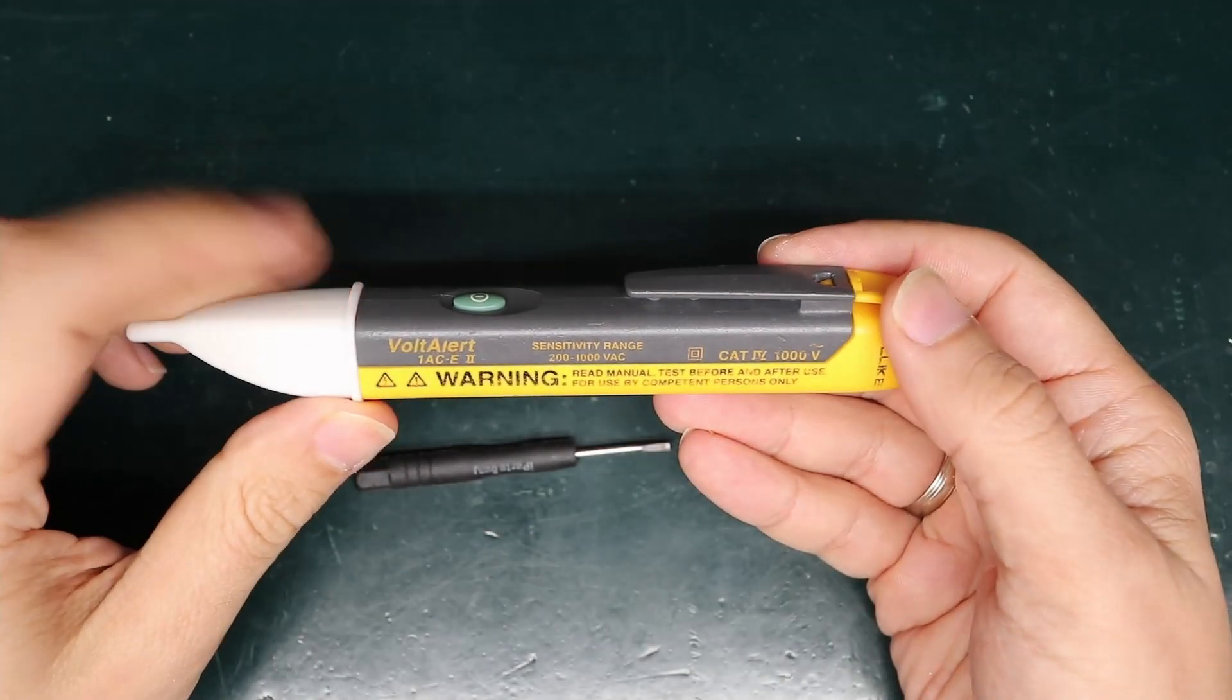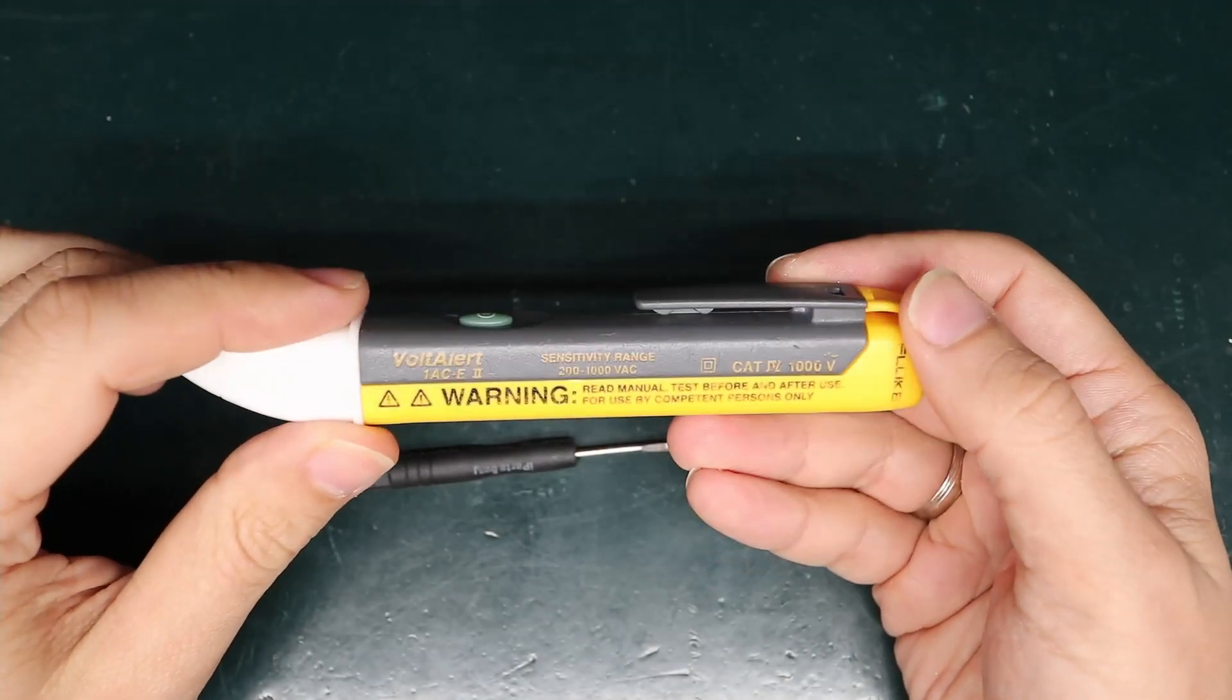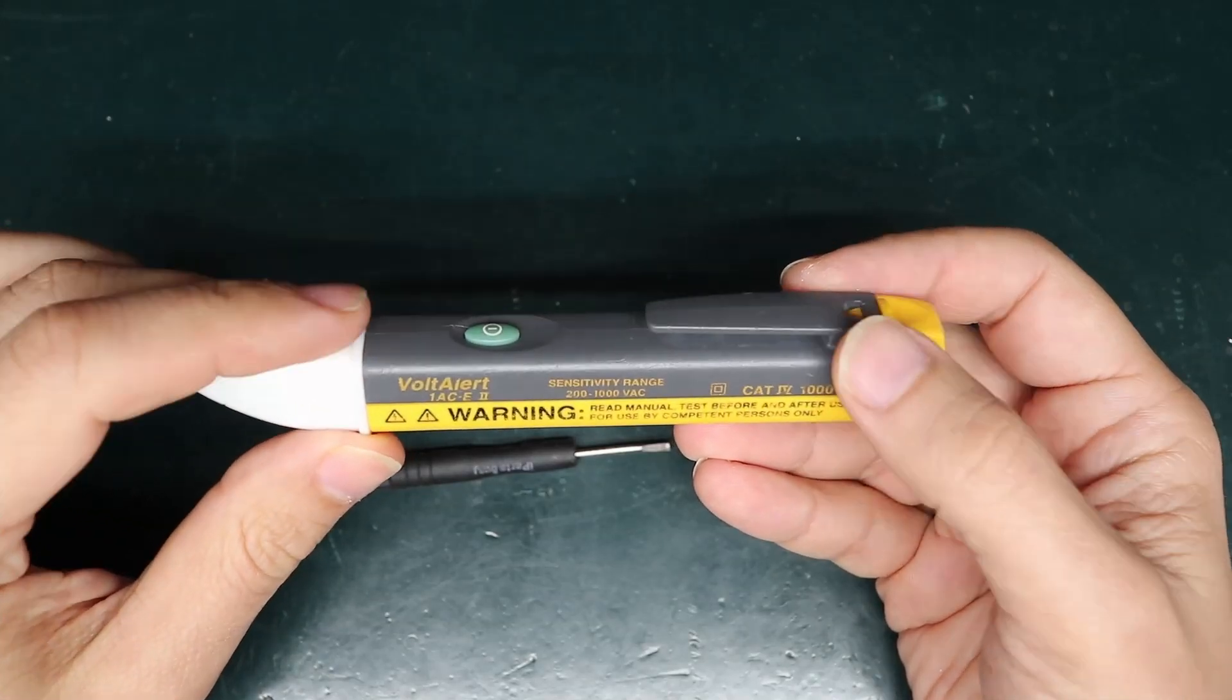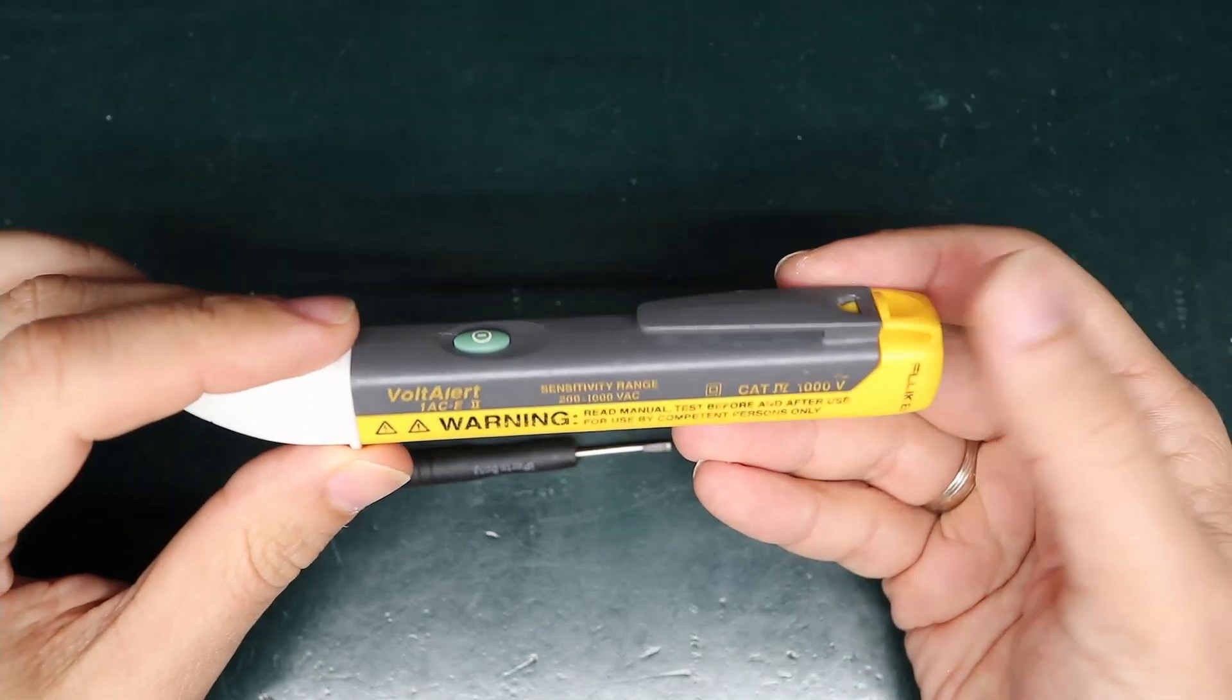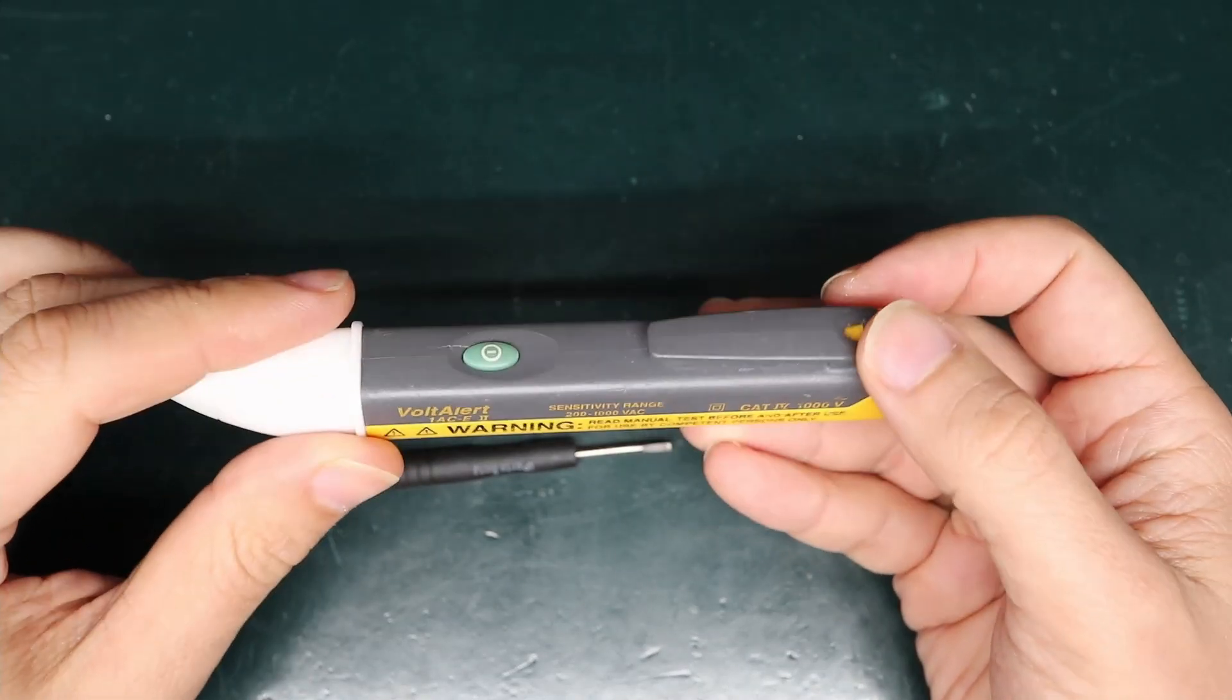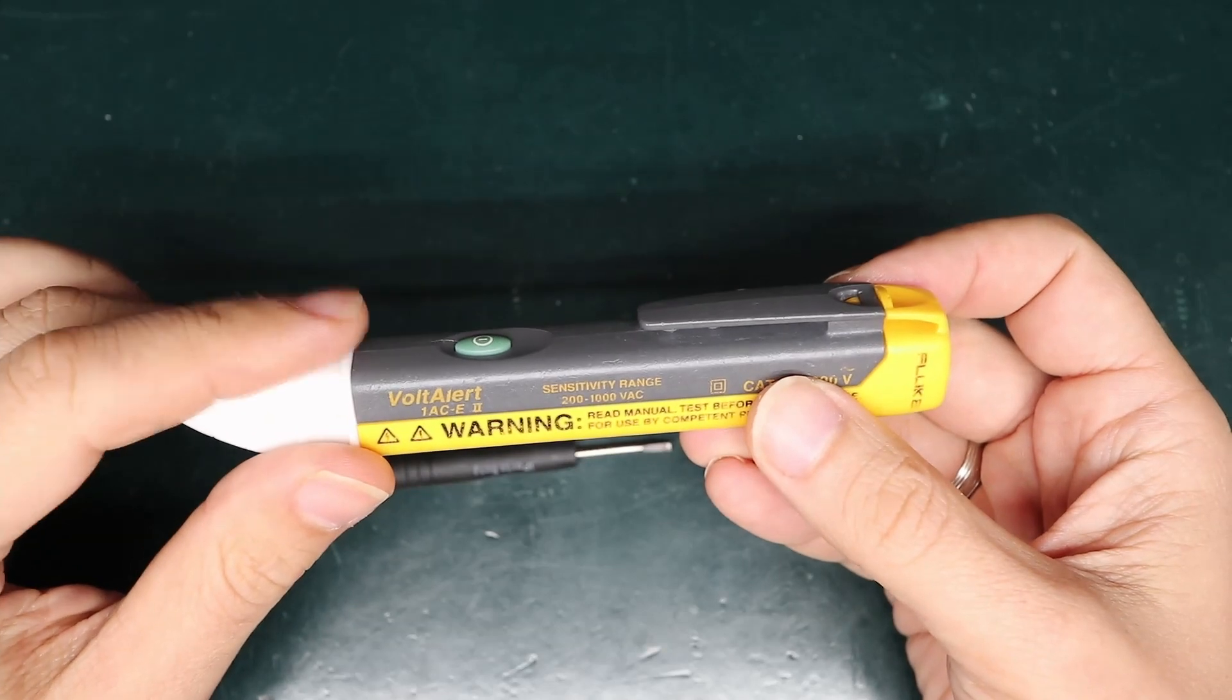Hi! If you have leaky batteries in your volt alert meter, you need to find a way to disassemble this unit. Today I'm going to show you how I did that without damaging anything in this unit.